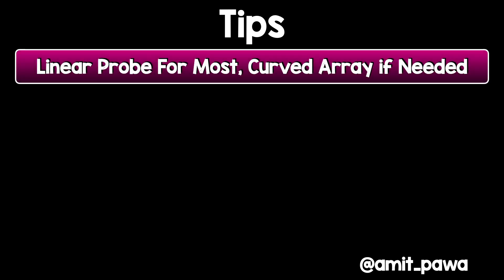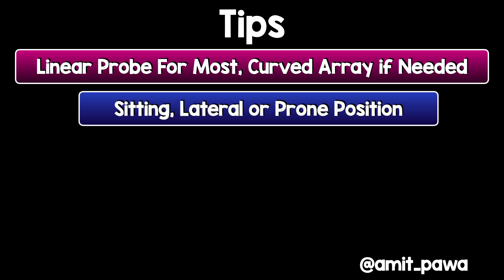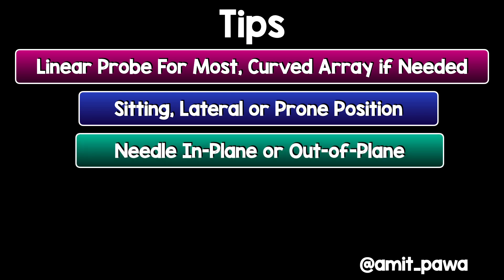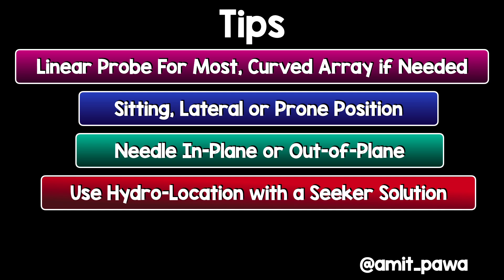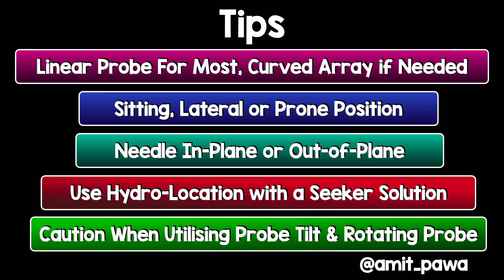Let's finish up with some tips. I like to use a linear probe for most paramedian sagittal paravertebral blocks, but sometimes you need a curved array probe. The beauty of this technique is you can perform it with the patient sitting, lateral, or prone — I prefer the prone position as it provides a more stable surface. I like to needle in-plane, though out-of-plane is also appropriate. Whatever you do, use hydrolocation with a seeker solution to make sure you don't lose sight of the needle tip, haven't inadvertently advanced too far, and have enough volume of local anaesthetic to inject once you reach the paravertebral space. A final note: to generate this image you may need a little probe tilt and rotation, so bear that in mind when needling in-plane — if your needle is not at 90 degrees to the skin, you may need to insert it slightly off-centre to see it in-plane.